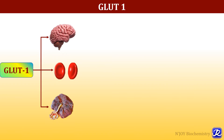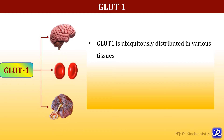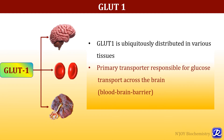GLUT 1 transporters are mainly located in the brain, erythrocytes, and placenta, and are ubiquitously distributed in various tissues. They are the primary transporters responsible for glucose transport across the blood-brain barrier. These GLUT 1 transporters are important specifically during fasting conditions — glucose uptake during fasting occurs with the help of GLUT 1 in the brain, erythrocytes, and placenta.